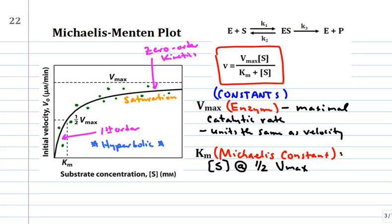Sometimes it's hard to know when you've actually leveled off. In fact, Vmax is somewhere above the fitted line because the line has not technically leveled off yet, but when it does level off it will get up to the Vmax line.